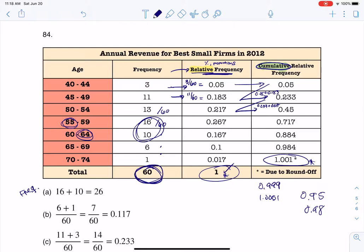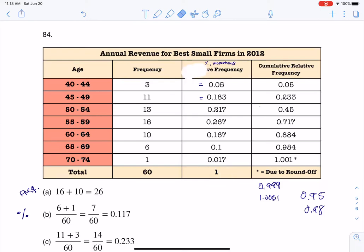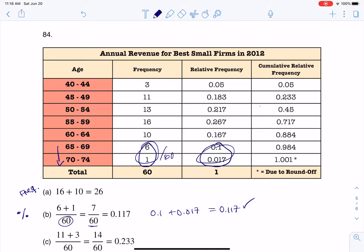For part B, this said, what was the percentage of CEOs that were 65 years or older? If I want a percentage, you can do this a few ways. You can go from the frequency column and then add what you need and divide by sample size, or you can use the relative frequencies. We want 65 years or older, so I want from here on down. I could take these two frequency numbers and divide by sample size, which is what I did. Or I could have just added those two numbers together. If you go on your calculator and do 0.1 plus 0.017, you sure will get 0.117. So there's a couple of ways to do it: frequencies and then divide both by 60 once you've added them, or just add the relative frequencies.